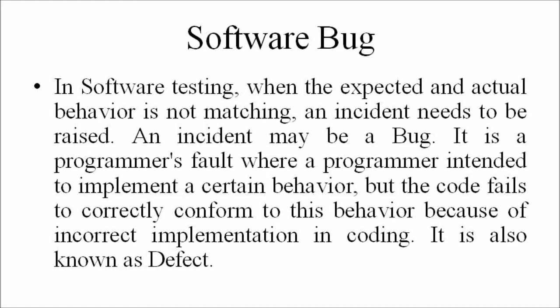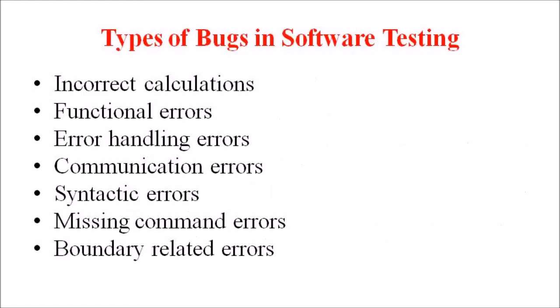Every day, testers all over the world encounter new types of software defects and issues, but some of them become very common as they appear more frequently than others. Some of those common types of bugs are: incorrect calculations, functional errors, error handling errors, communication errors, syntactic errors, missing command errors, and boundary related errors.